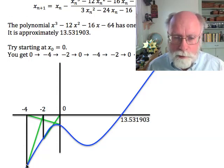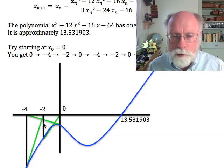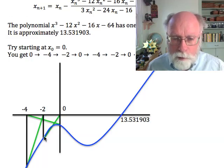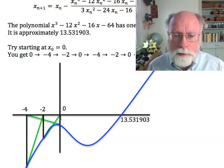You evaluate the function at minus 4, follow the tangent back to the x-axis, you hit minus 2. Go to the function, follow the tangent line, and you're back to 0.